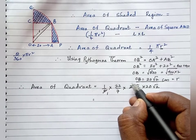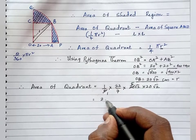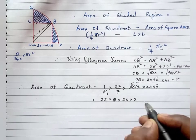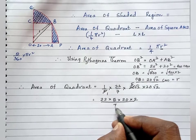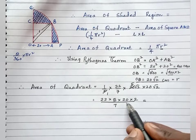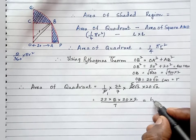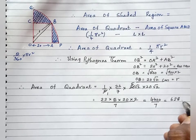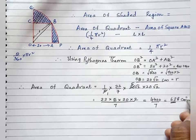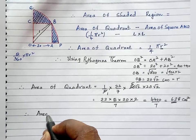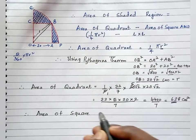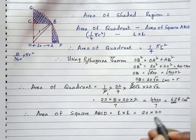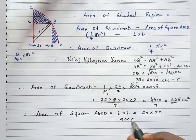Area of quadrant equals 1/4 into 22/7 into 20 root 2 into 20 root 2. Cancelling common terms: root 2 into root 2 equals 2, and simplifying gives 22 into 5 into 20 into 2 divided by 7, which is approximately 628 centimeter square. Area of square OABC equals length into length, that is 20 into 20, which gives 400 centimeter square.